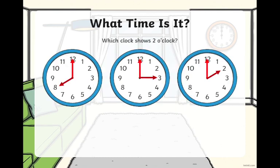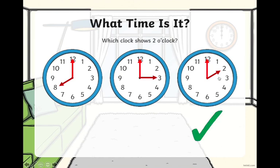Now, they are asking us which clock shows 2 o'clock. We know the minute hand is always pointing at the 12 when it is o'clock. Where should the hour hand be pointing — at 8, 3, or at 2? If you guessed 2, that would be correct.